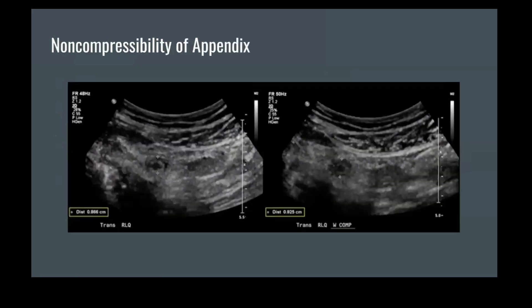Next, we have two transverse images that demonstrate the non-compressibility of the appendix. On the left, we have an image of when the probe is used to compress the appendix. On the right, we have an image of when the probe is not pushed against the appendix. We can see the measurements of the appendix diameter at the bottom: 0.866 cm on the left and 0.925 cm on the right. As you can see, there is no significant difference in the change in diameter.